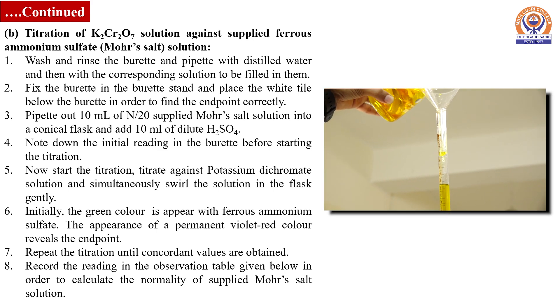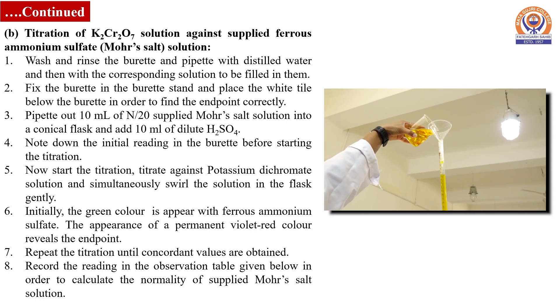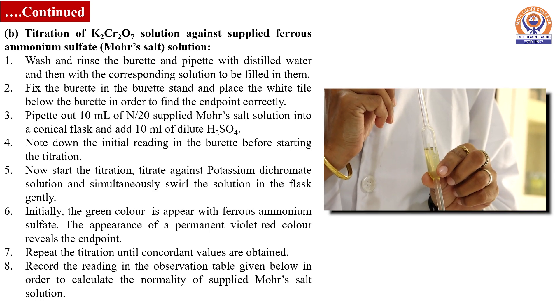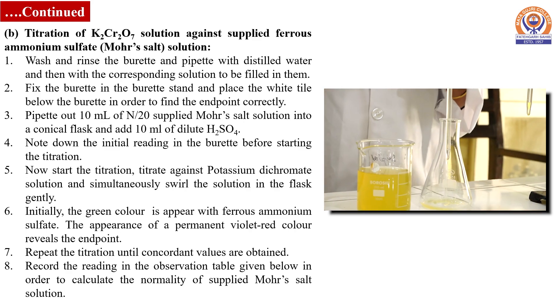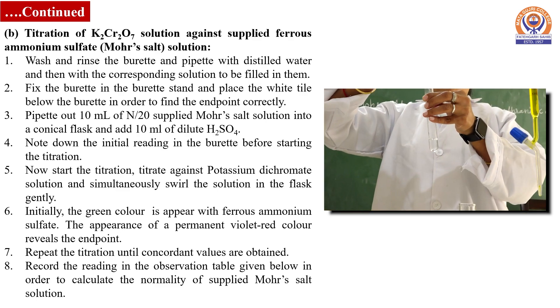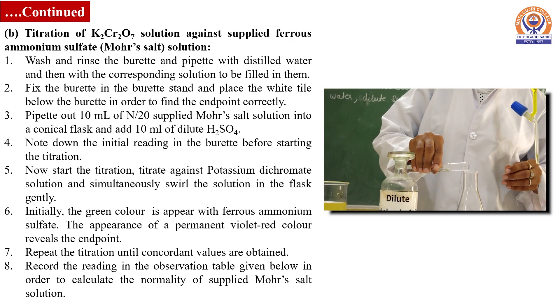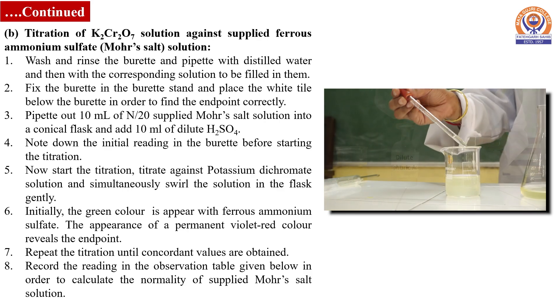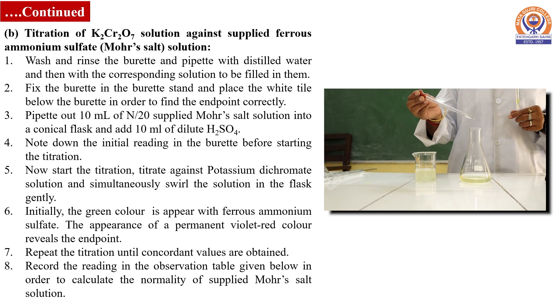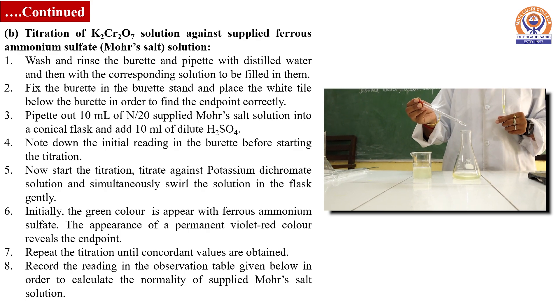Rinse and fill the burette with N/20 potassium dichromate solution. Pipette out 10 ml of Mohr salt solution and transfer to a titration flask. Also add 10 ml of dilute sulfuric acid to the conical flask.